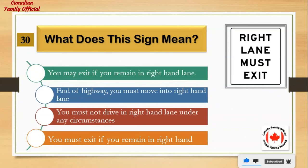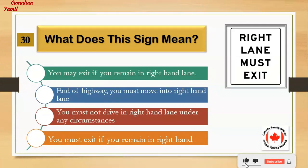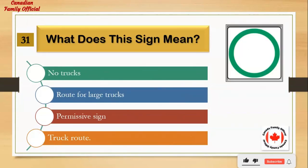What does this sign mean? Number 1: you may exit if you remain in right-hand lane. Number 2: end of highway, you must move into right-hand lane. Number 3: you must not drive in right-hand lane under any circumstances. Number 4: you must exit if you remain in right-hand lane. And the answer is: you must exit if you remain in right-hand lane.